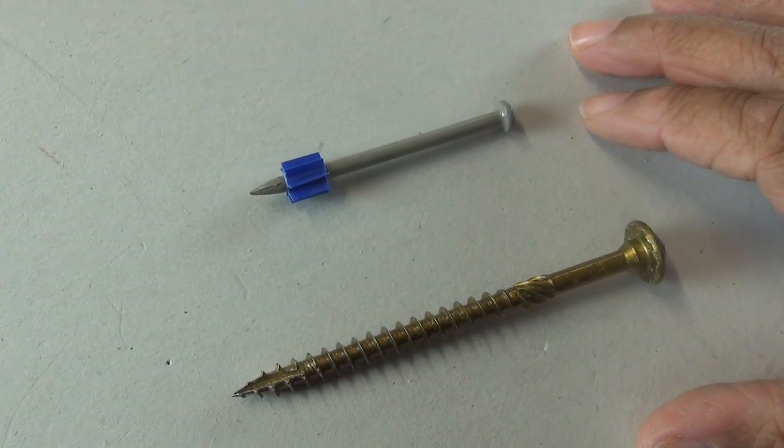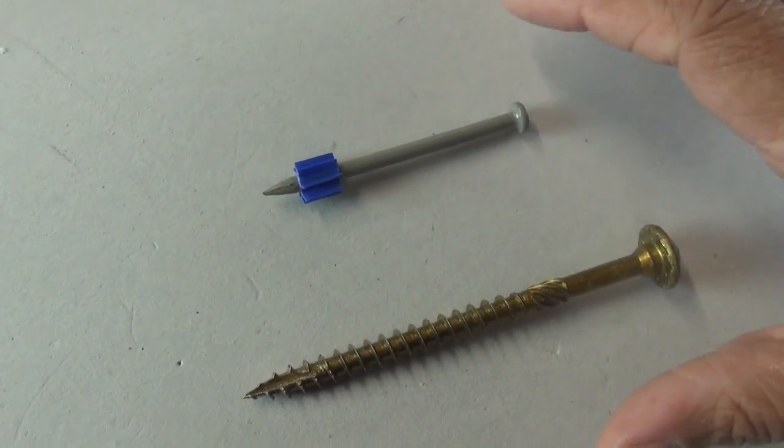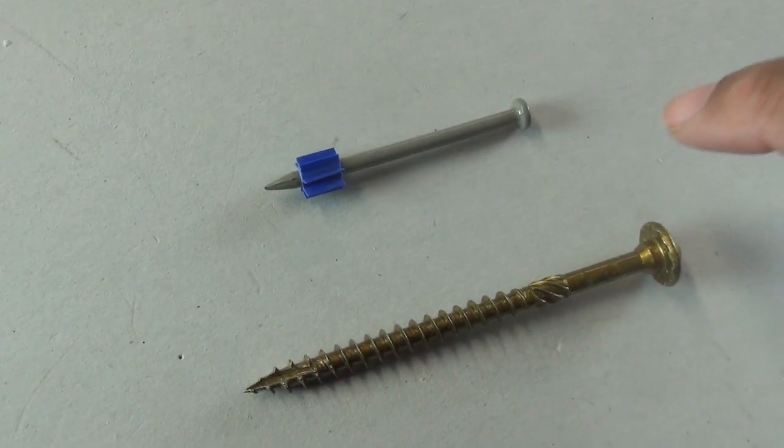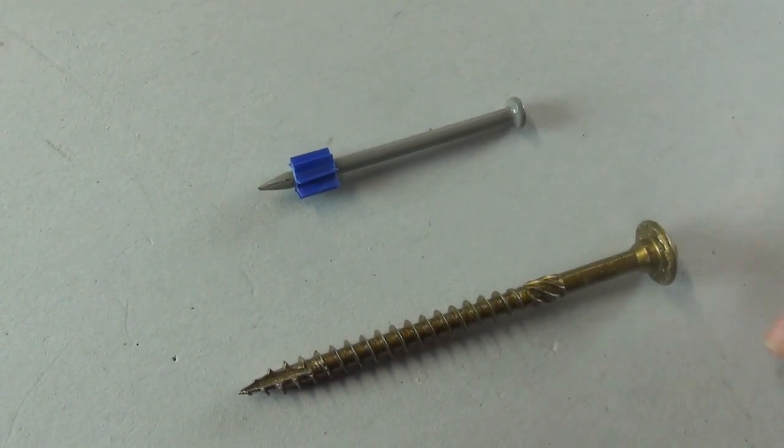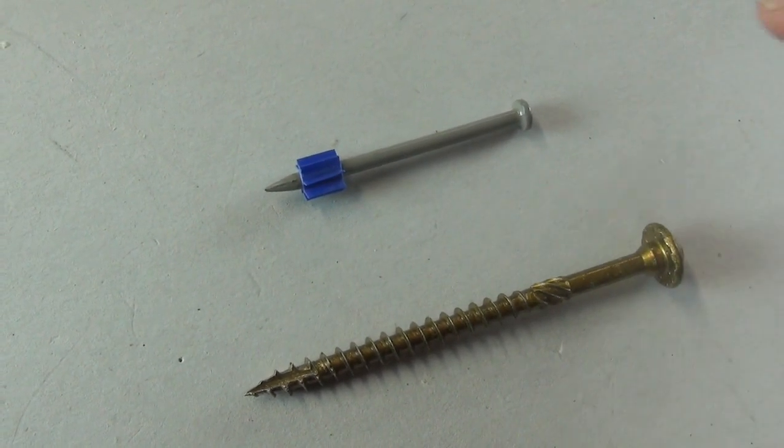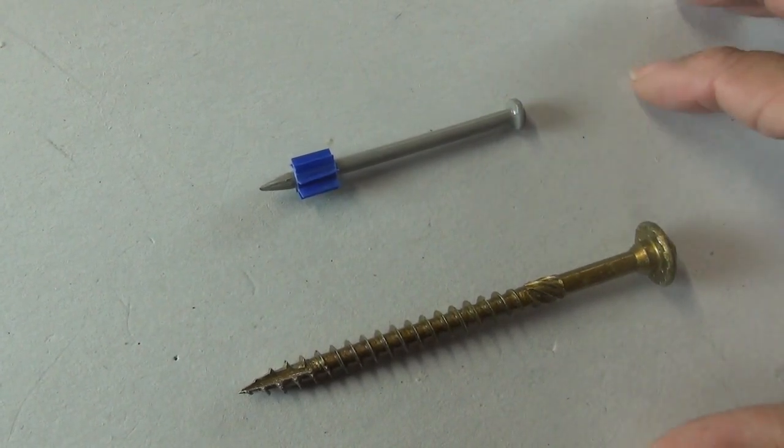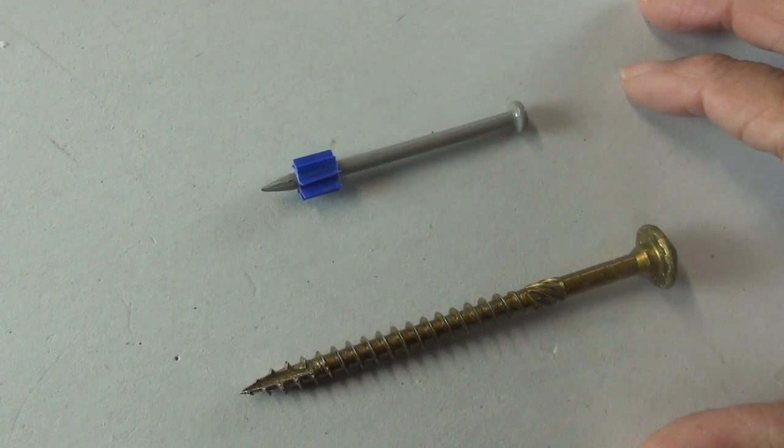This is where we start going down the rabbit hole with both fasteners. With structural screws, building codes come into play, and that's when it starts to get very complicated. I just wanted to touch on drive pins and structural screws lightly because they're specialty fasteners.